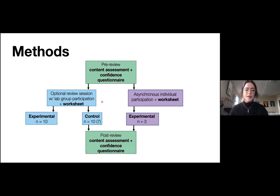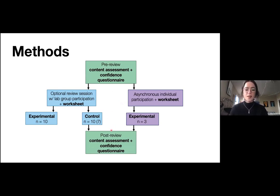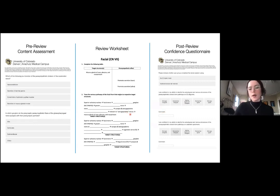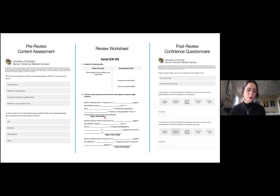After filling out the worksheet and interacting with the models or their respective lecture and lab resources, students were then invited to fill out completely anonymized online post-review content assessments and confidence questionnaires. This slide shows what the content assessments, the review worksheet itself, and confidence questionnaire looked like. Students dealt with Likert scales on the confidence questionnaire, complete nervous and osteological pathways for the review worksheet, and some general content questions.